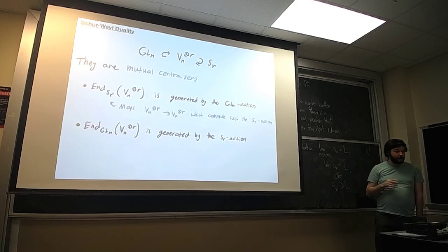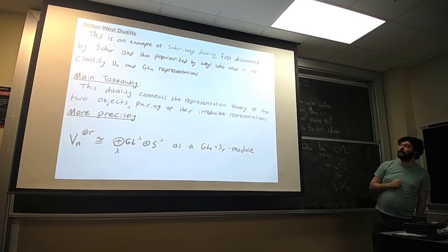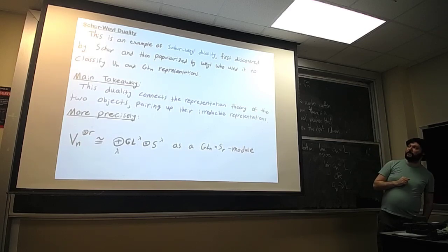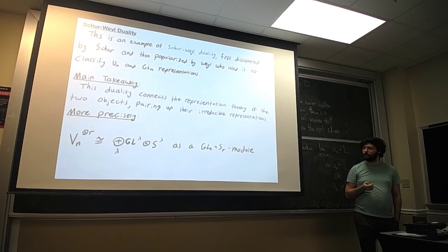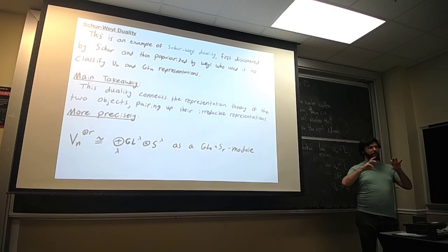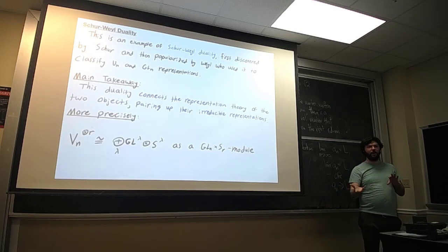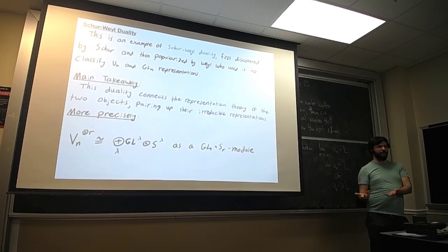This situation is an example of Schur-Weyl duality, first discovered by Schur and Weyl, used to classify representations of many classical groups. This duality connects the representation theory of the two objects — it pairs up the irreducible representations in a way that lets you study representations of one by studying representations of the other. That's how I use this idea to study representations of the symmetric group.